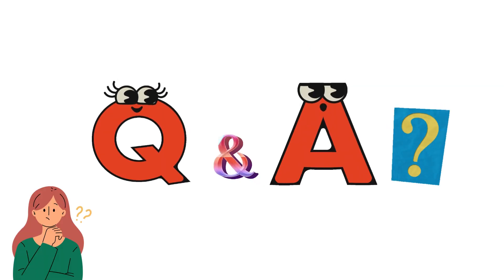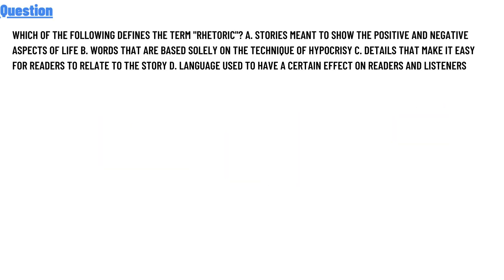So let's get to today's question: which of the following benefits Trump's rhetoric? Option A: stories that show the positive and negative aspects of life. Option B: words based solely on the techniques of the IPOS road. Option C: details that make it easy for readers to relate to the subject. Option D: language used to have a certain effect on the readers and listeners.